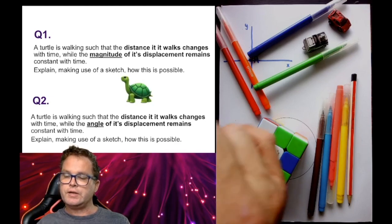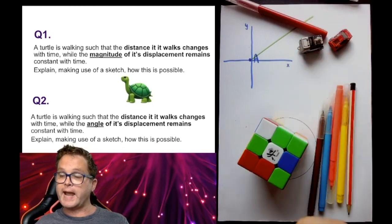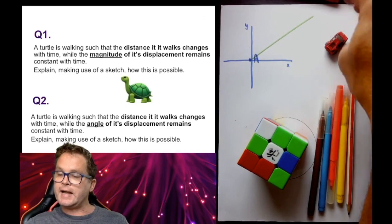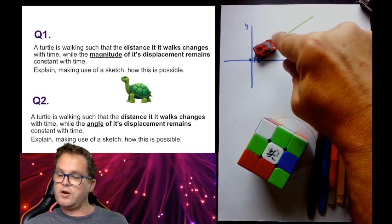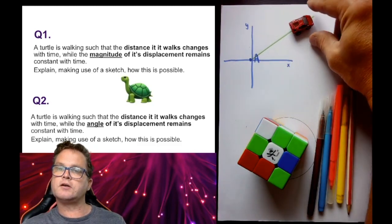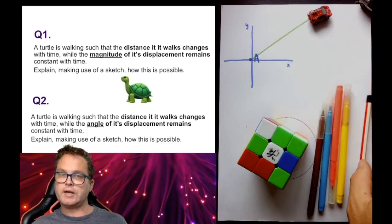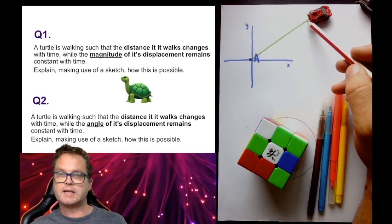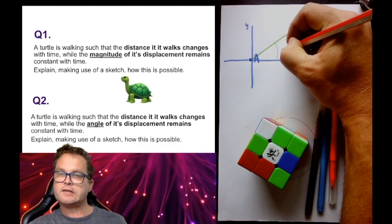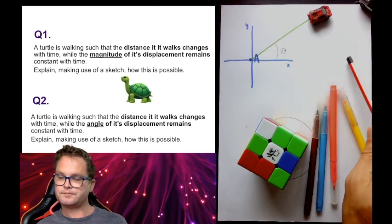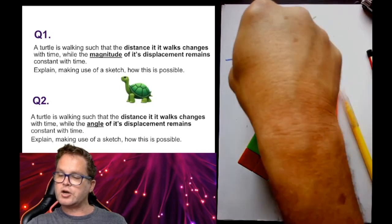For question two, we're looking for the case where the distance changes with time while the angle remains constant. Instead of a turtle, consider a car starting at position A and driving in a straight line along a green line. As time goes by, the distance the car travels gets bigger, whereas the angle of the displacement remains the same — this angle theta will remain the same. The car could head off in any direction, as long as it goes in a straight line.